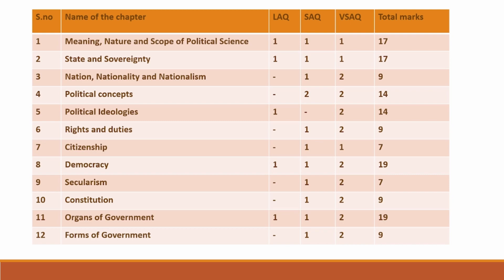Chapter 9: Secularism. You will get 1 SAQ and 2 VSAQs from this chapter. The weightage for this chapter is 7 marks. Chapter 11: Organs of Government. You will get 1 LAQ, 1 SAQ and 2 VSAQs from this chapter. The weightage for this chapter is 19 marks.